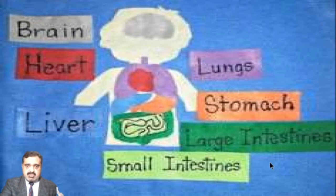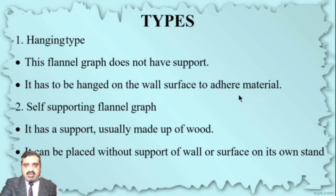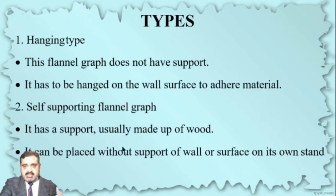There are different types of flannel board being used. It has different types, like the hanging type. This flannel board does not have a stand. It has to hang on the wall surface to adhere material. The second one is the self-supporting flannel board. It has a stand and is really made up of wood, and it can be placed without support of wall or surface on its own stand.